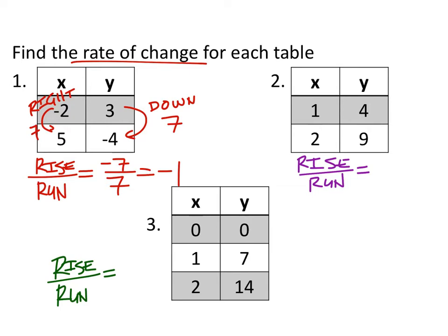In table two, it's the same idea — we're going from four to nine, which would be up five. So that gives us a rise of positive five. And the run, if it changes the x's, that goes to the right one. So that gives us a run of positive one, and five divided by one is five.